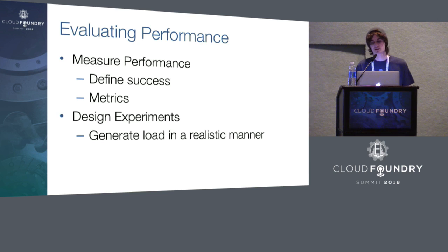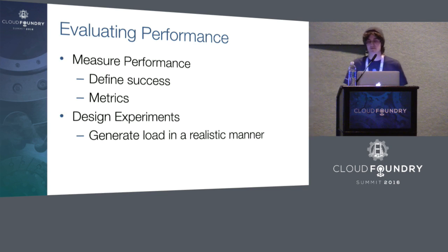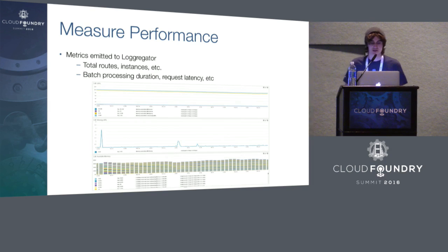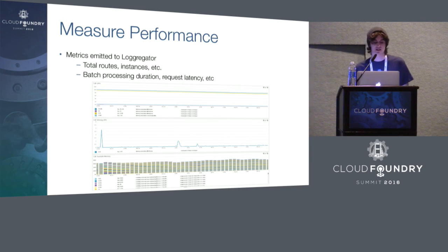Through both metrics and log lines emitted to Loggregator, we're able to monitor the state of the system and get a complete image of performance at any given time. Along with being able to measure and monitor system health, we also need to design experiments that produce meaningful data. The questions we have to answer are: how do we generate a realistic load to run on Diego, and how does Diego perform under unusual situations such as bursty loads or failures? When designing the performance test suites, we need to generate the correct artificial load to have confidence in the system and the metrics we obtain.